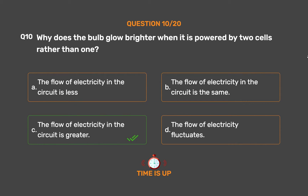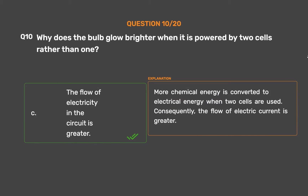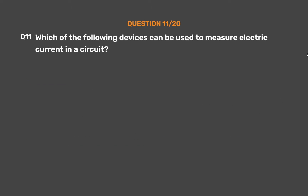The correct answer is Option C: The flow of electricity in the circuit is greater. More chemical energy is converted to electrical energy when two cells are used. Consequently, the flow of electric current is greater.